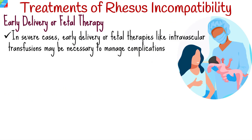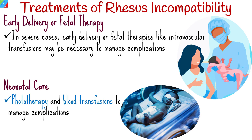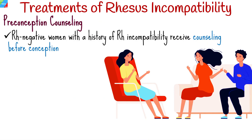In severe cases, early delivery or fetal therapies like intravascular transfusions may be necessary to manage complications. Infants born to Rh-sensitized mothers may require neonatal care, including phototherapy and blood transfusions, to manage complications resulting from Rh hemolytic disease, such as jaundice and anemia. Rh negative women with a history of Rh incompatibility receive counseling before conception to discuss risks and management strategies for subsequent pregnancies.